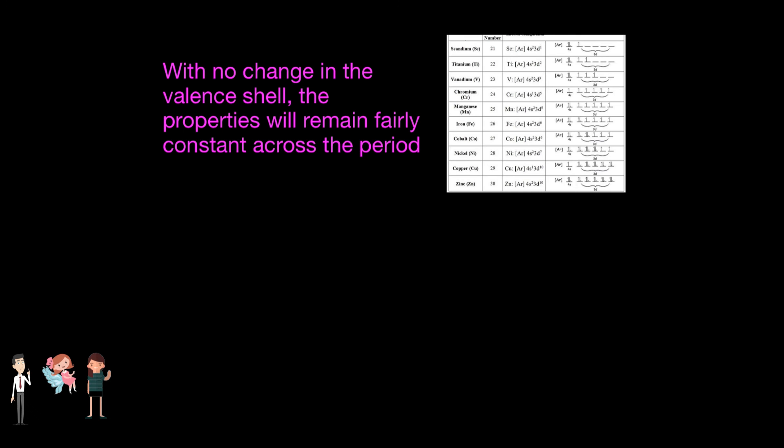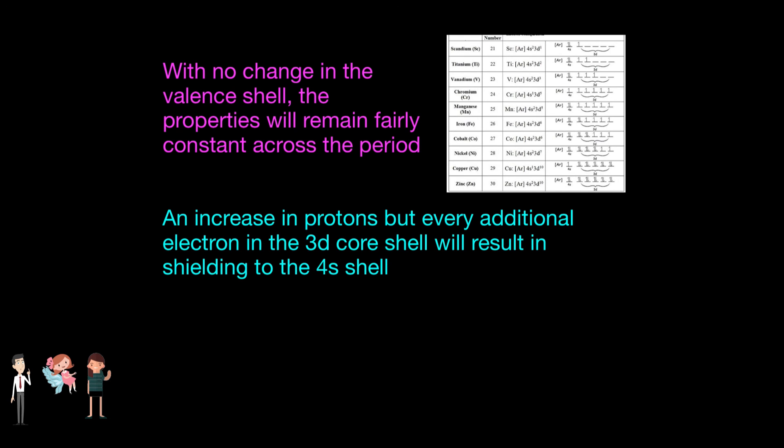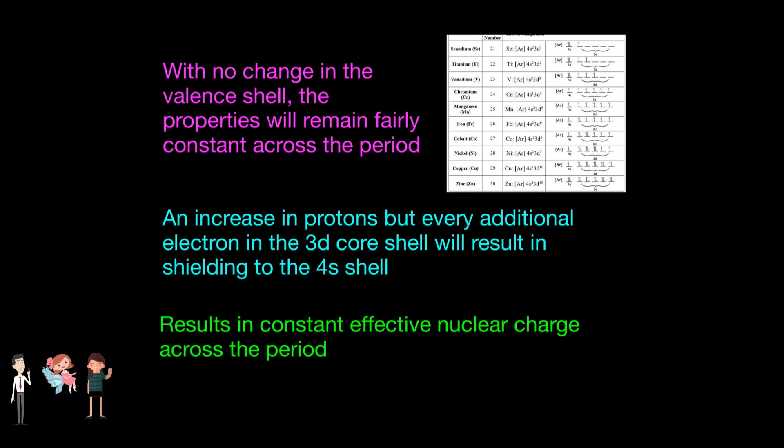Since the properties of any transition metal — or all elements — are controlled by the valence shell rather than its core, with no change in the valence shell, the properties will remain fairly constant across the period. As you go across the transition metals, there will be an increase in protons, which one would expect to result in a larger effective nuclear charge. However, every additional electron in the 3d shell will inevitably result in shielding to the 4s shell, which will also allow for a constant effective nuclear charge across the period. This consistency explains why the properties are so similar.